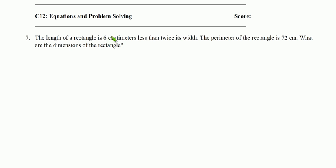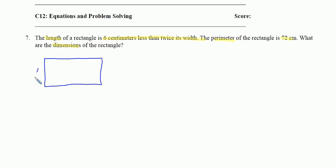Number 7: the length of a rectangle is 6 centimeters less than twice its width, and the perimeter is 72. What are the dimensions? Let's start with a sketch. The width is unknown, so let's call it x. The length is twice the width minus 6, so 2x minus 6. The perimeter — the distance around — equals 72.